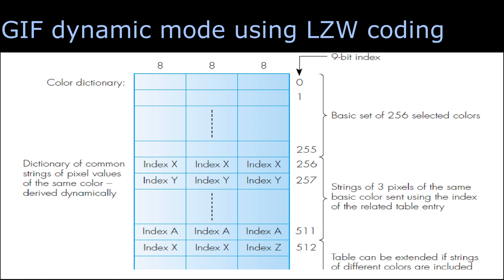When new patterns of colors or new colors have come, then that will be stored in the location 512, thereby extending the dictionary to the 10-bit index.